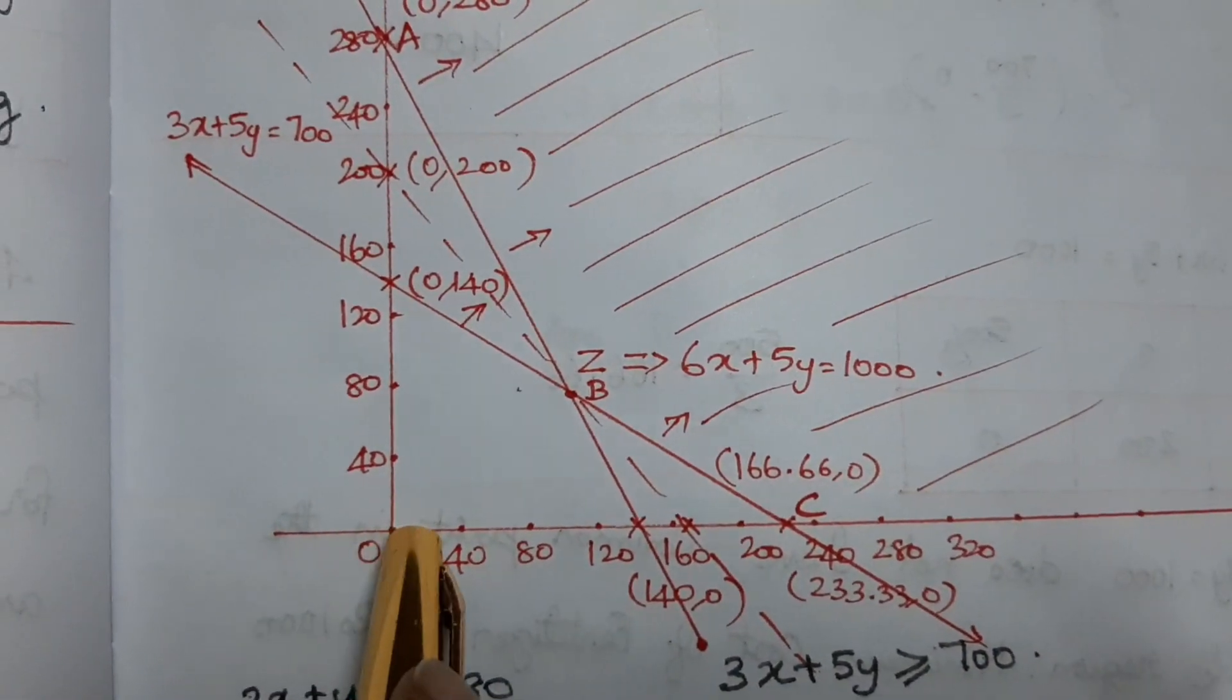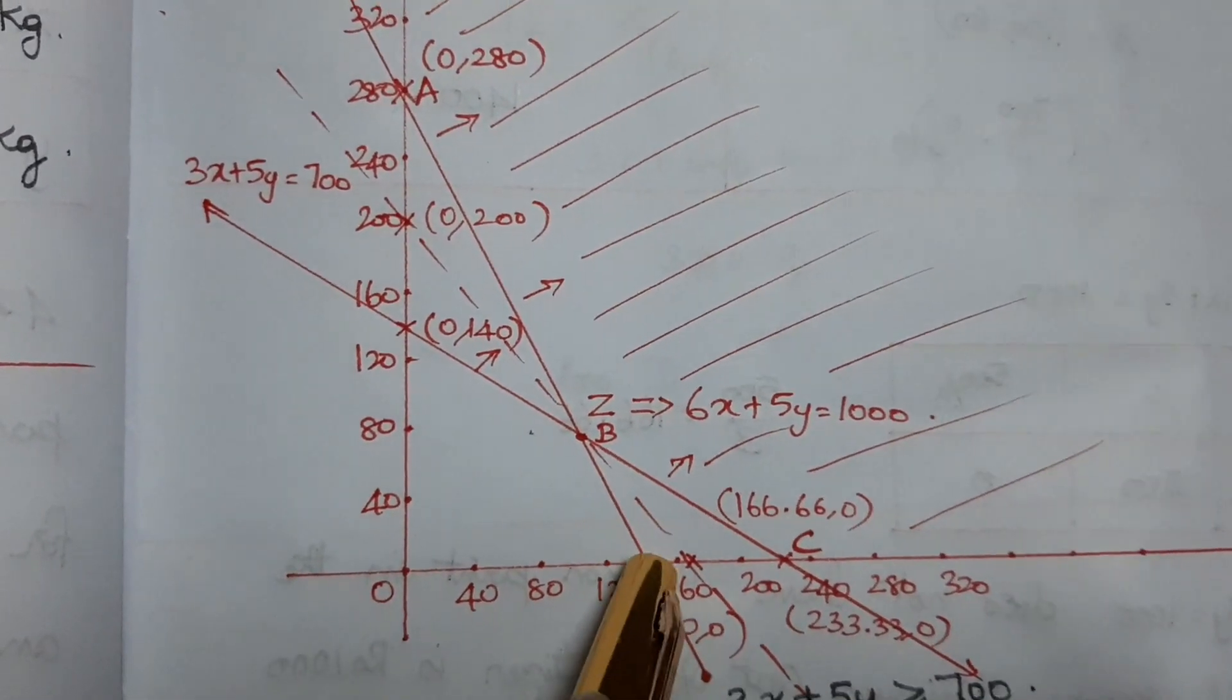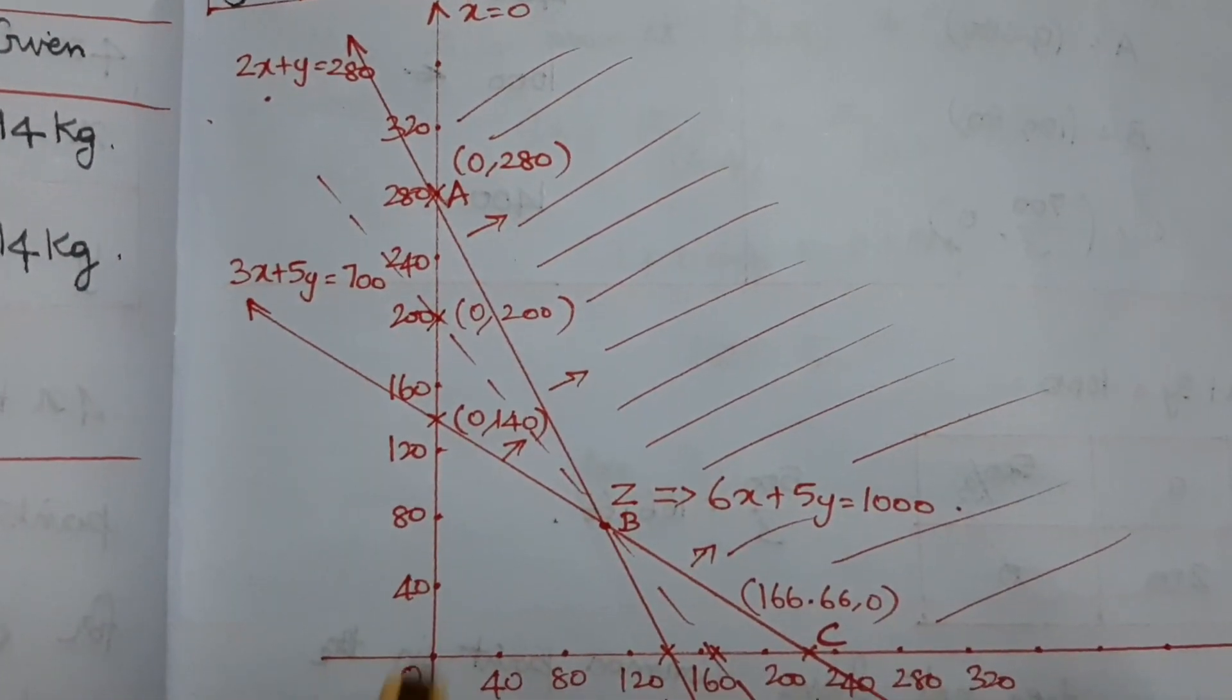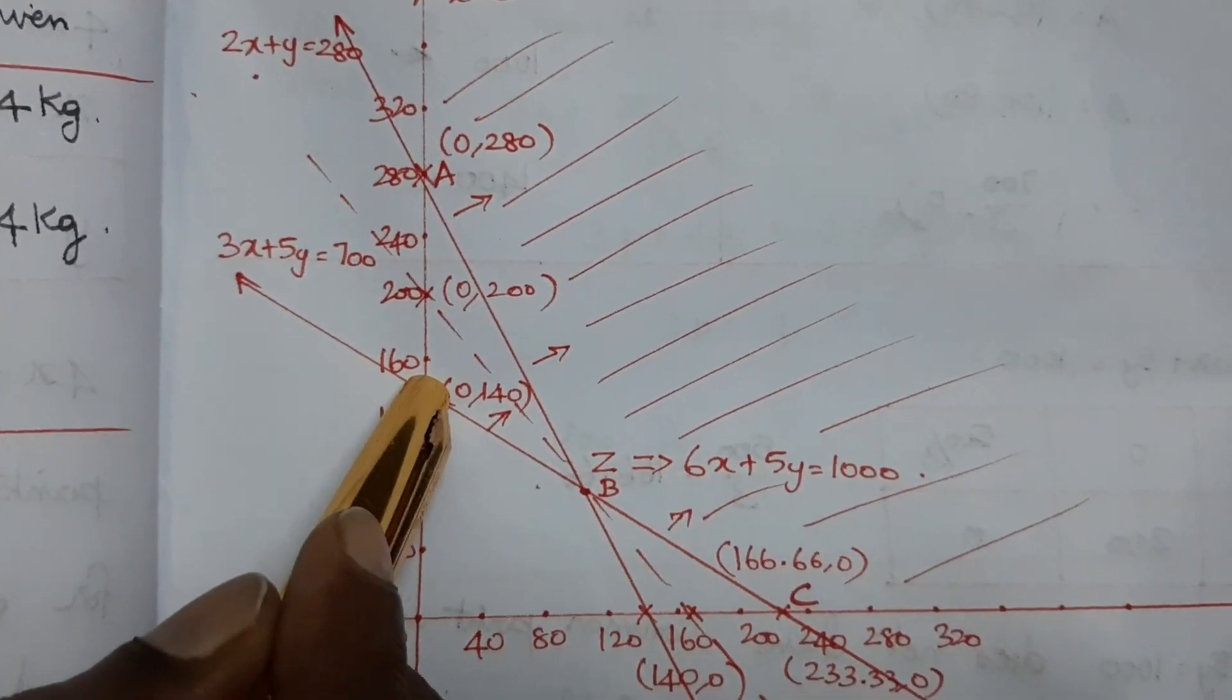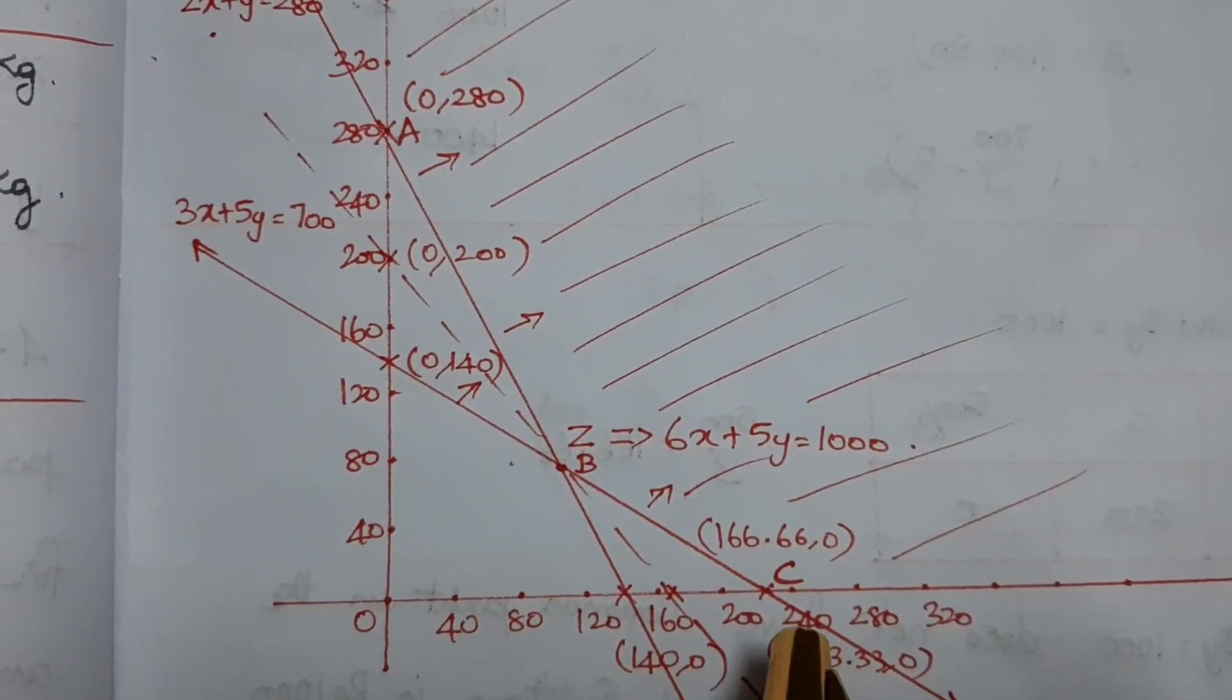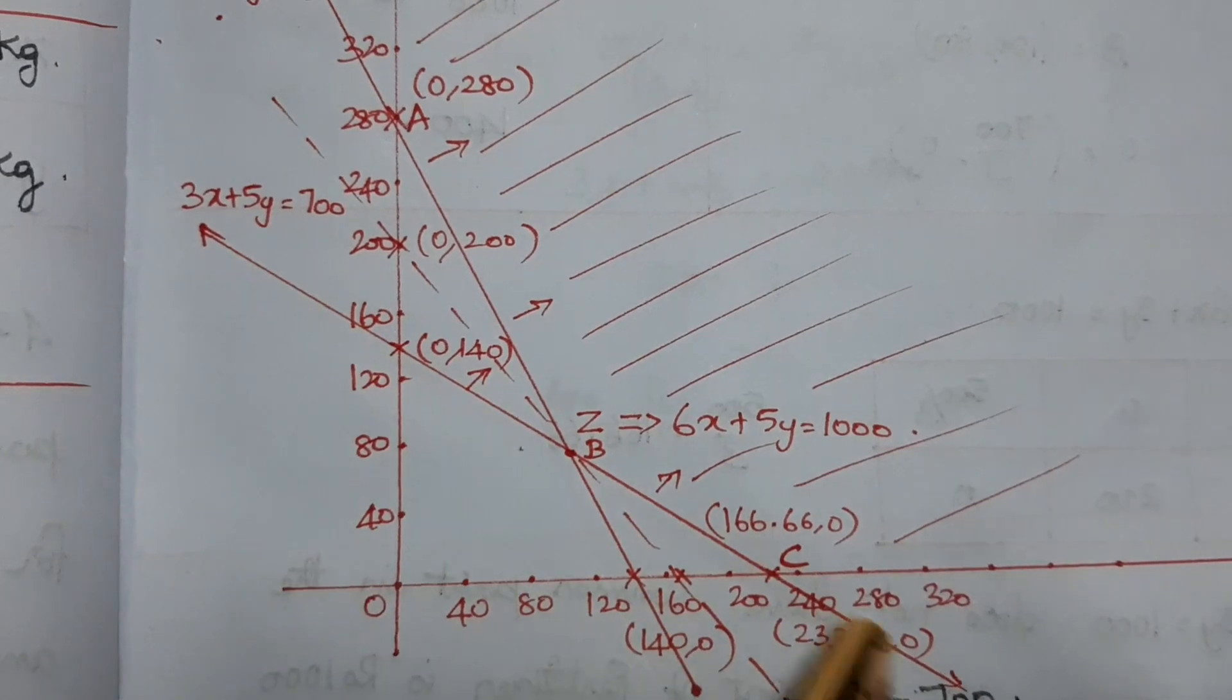Graphing these: Point 0, 280 and point 0, 140. For the line 2x plus y equal to 280. For the second constraint, 0, 140 and 700 by 3, which is approximately 233.